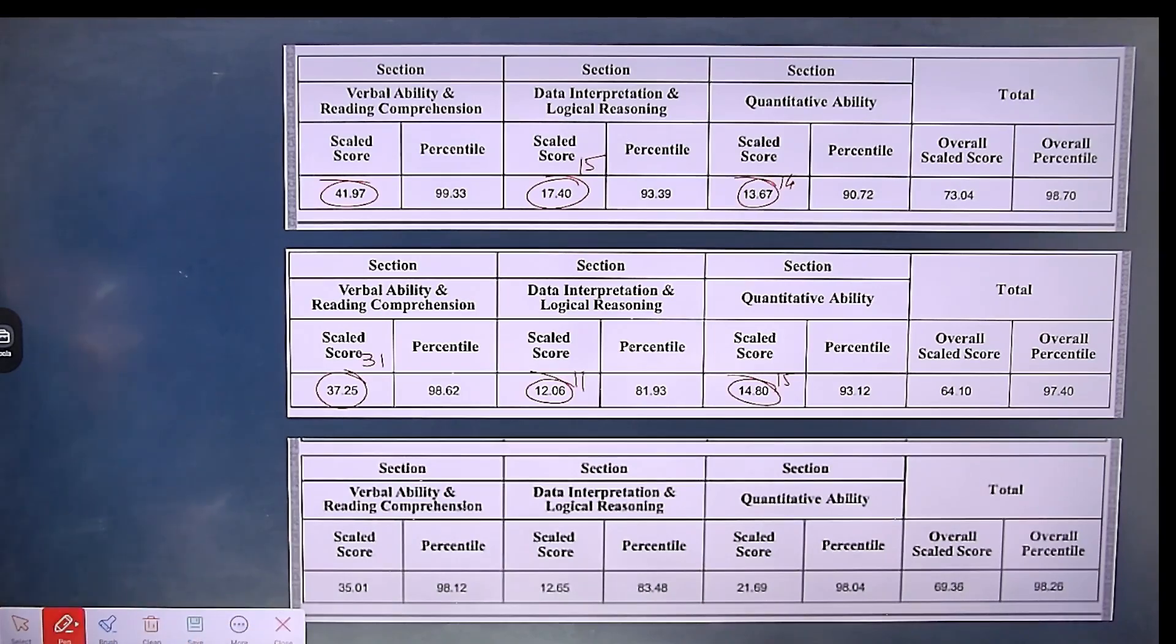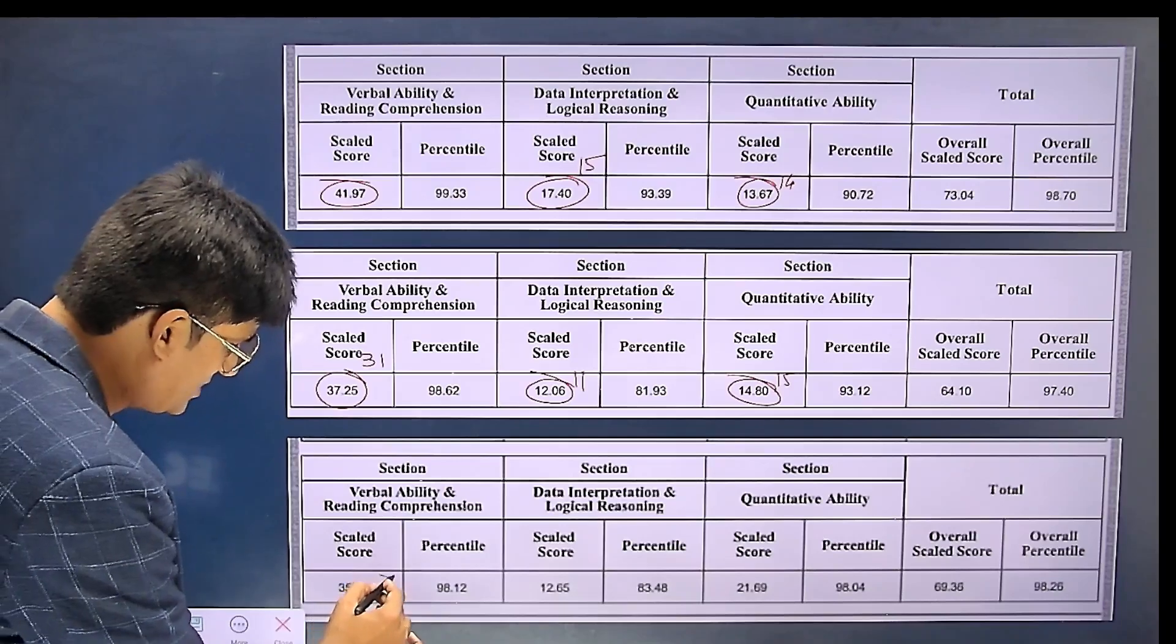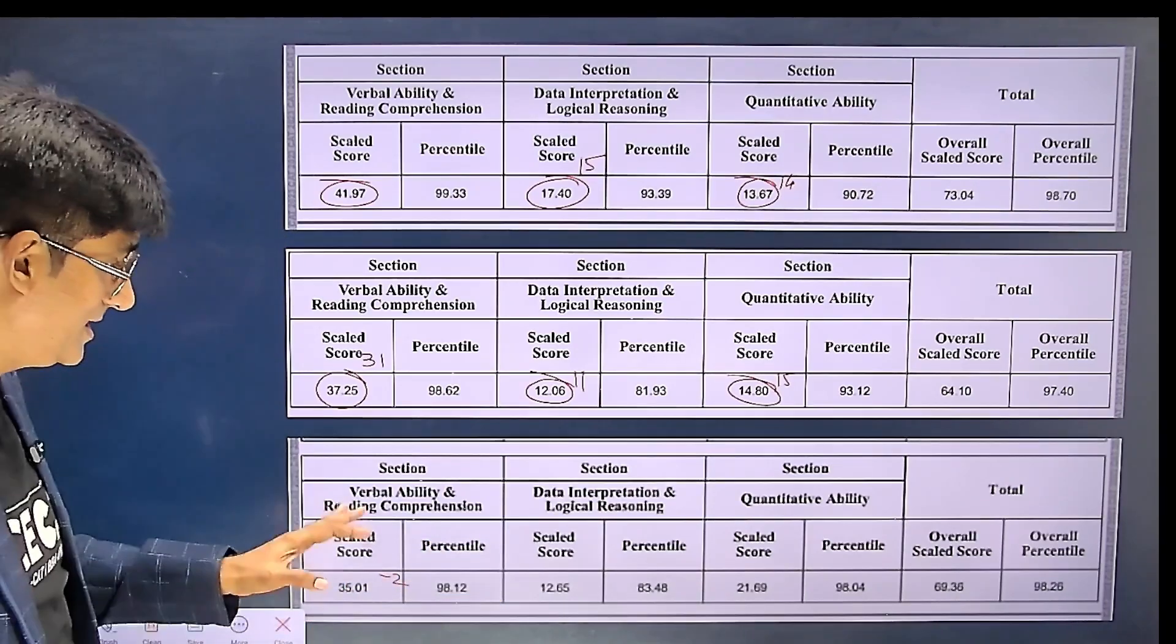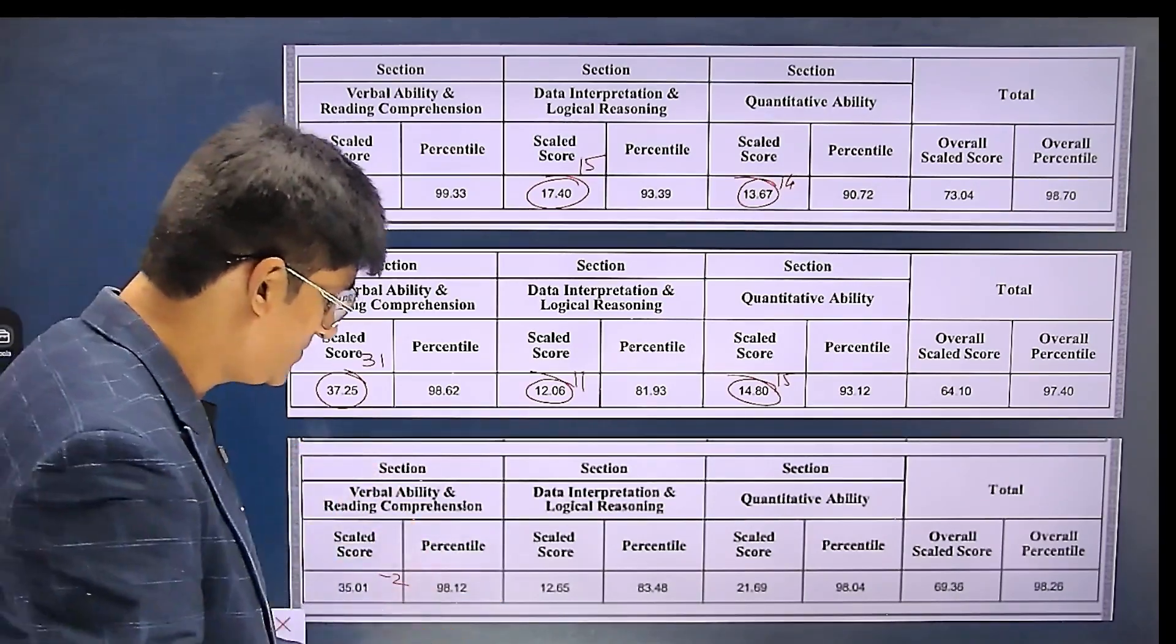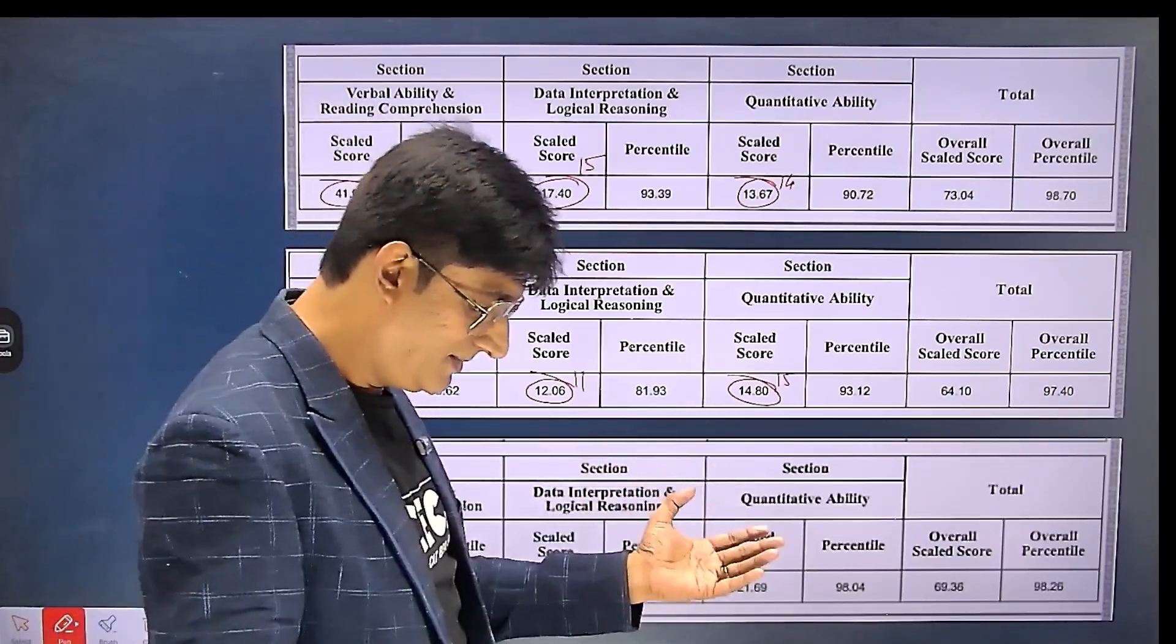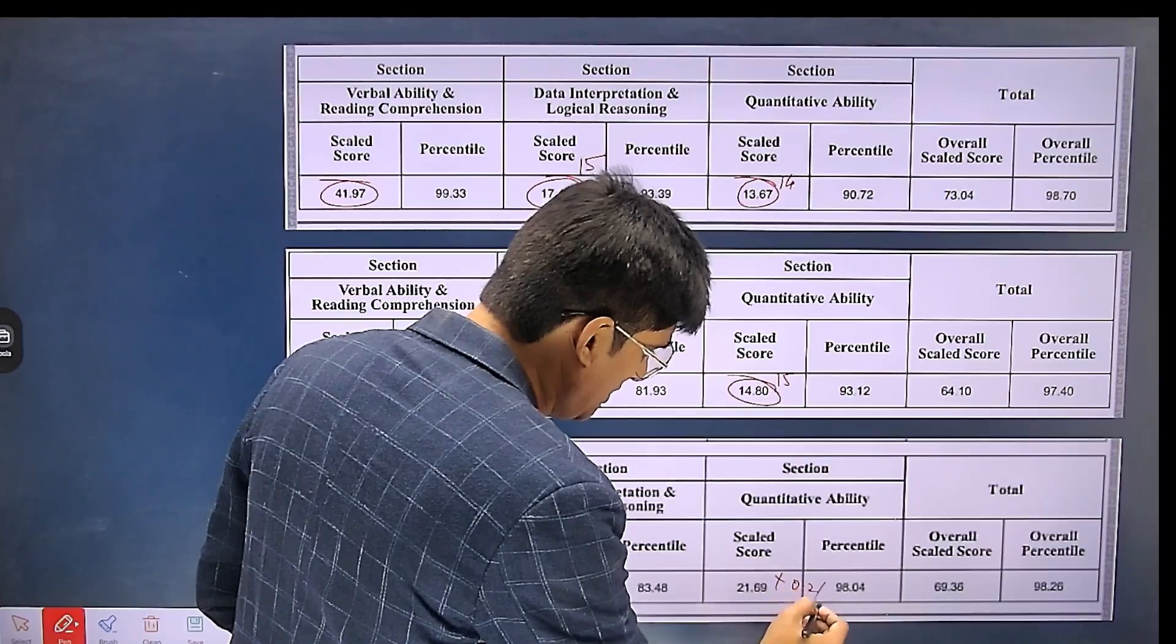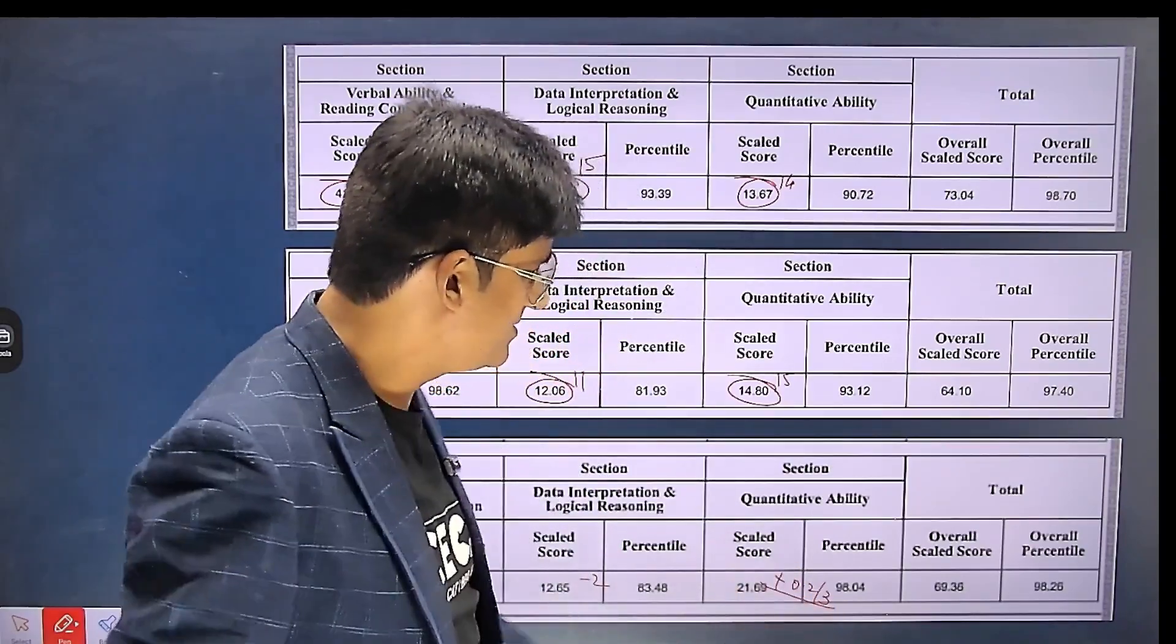Coming to the third slot, if you see English, this student's score actually scaled down. In DI-LR also, students, slot three scaled down by almost two marks. In Math it scaled up slightly by about 0.2 or 0.3. At a score of 69.36, this boy is getting 98.26 percentile.